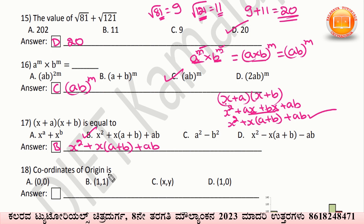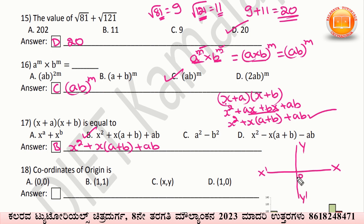Coordinates of the origin. The origin is where the x-axis and y-axis intersect. At the x-axis the value of x is 0, and at the y-axis the value of y is also 0. The midpoint of intersection of the x-axis and y-axis has value (0, 0). This is called the origin. Option A — (0, 0) — is the correct answer.